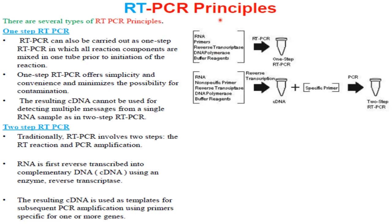There are two types of RT-PCR: one-step RT-PCR and two-step RT-PCR. In one-step RT-PCR, all reaction components are mixed in one tube prior to initiation of the reaction. The components are RNA, primer, reverse transcriptase, DNA polymerase, and buffer reagent. One-step RT-PCR offers simplicity and convenience and minimizes the possibility of contamination.